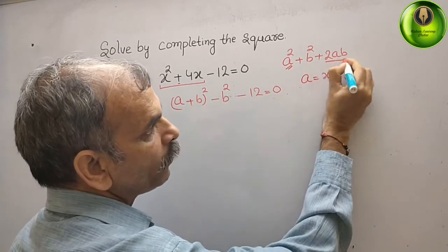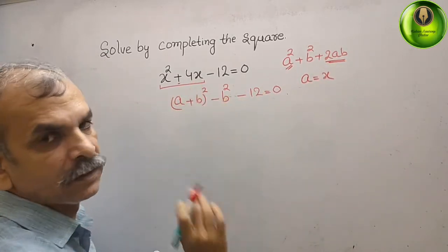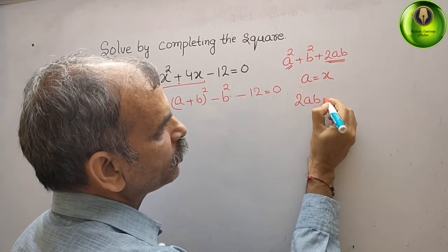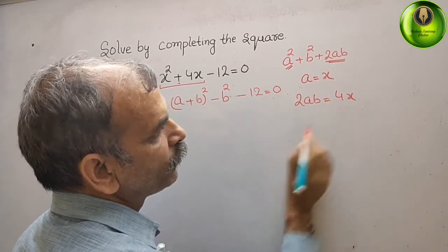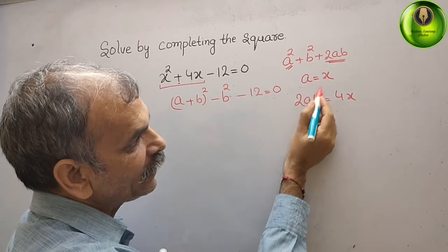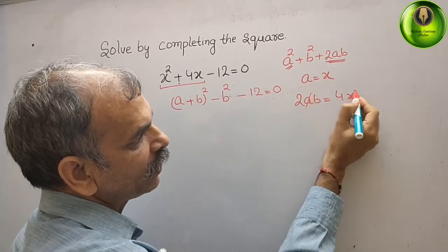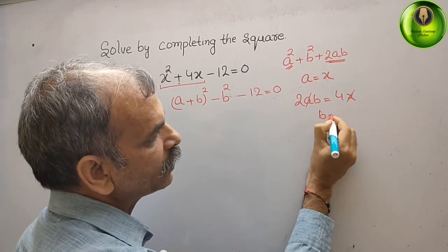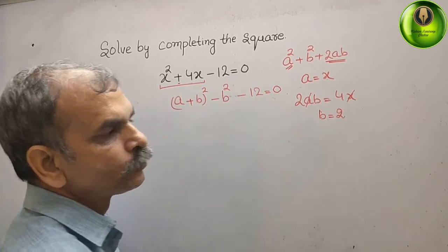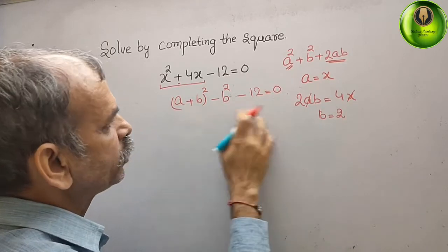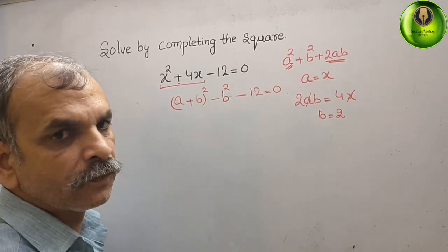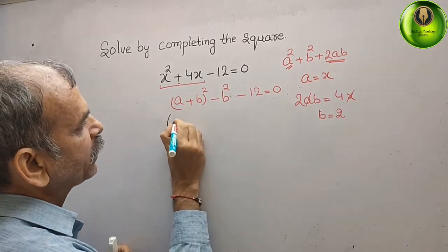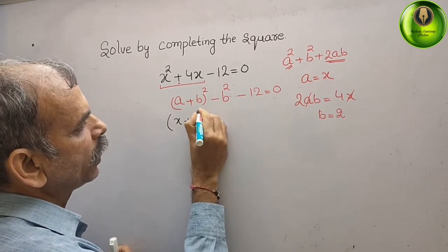Now 2ab equals 4x. We know that a is x, so 2 times x times b equals 4x, which means b equals 4 divided by 2, that is b equals 2. Substituting these values, we get (x plus 2) whole square.